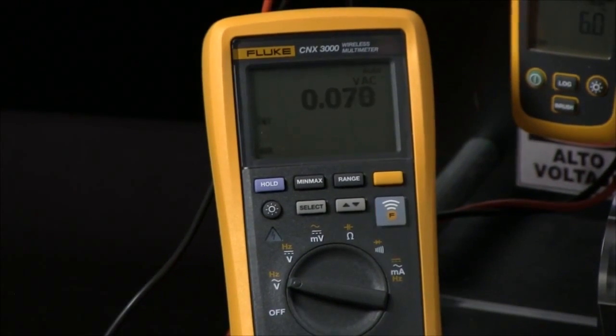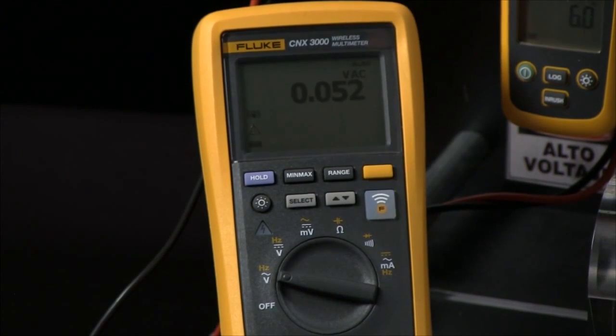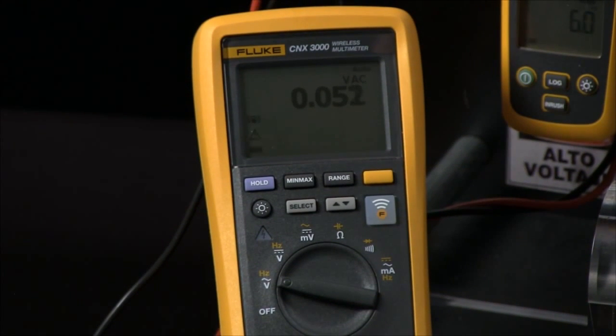It will go out and poll to see how many wireless modules are out there. We can connect up to 10 wireless modules and display three of them on the display of the meter at one time.